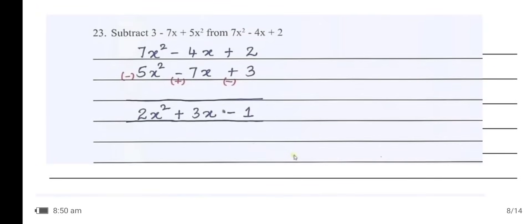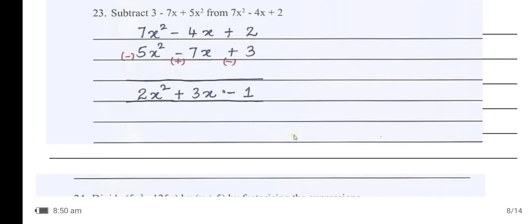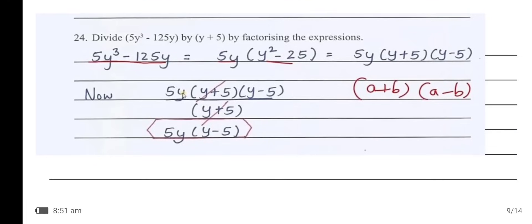Subtract (3 − 7x² + 5x) from (7x² − 4x + 2). Substituting and simplifying, we get the result: 12x² − 9x − 1.